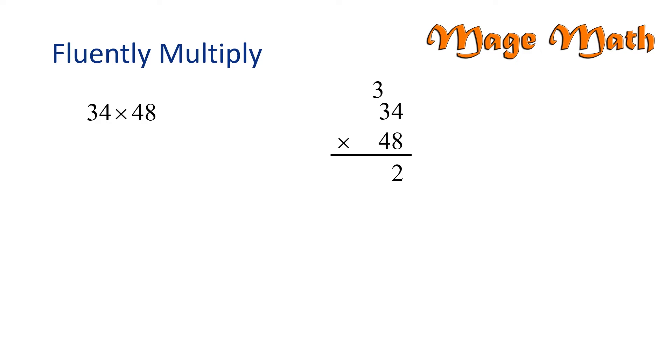Now we need to multiply eight times three, which is twenty-four, but we add the three that we carried before. Twenty-four plus three is twenty-seven. Our next step is to write a zero as a placeholder before we start multiplying by the four in forty-eight. We also need to cross out the three that we had carried before.